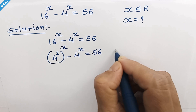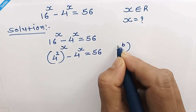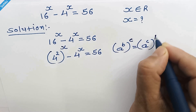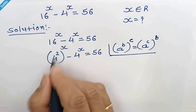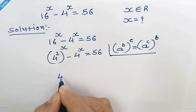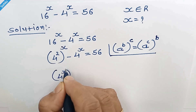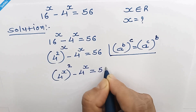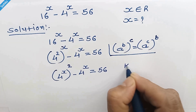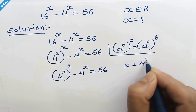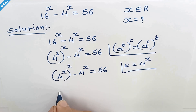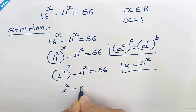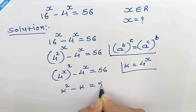Let's recall a rule: a raised to b, whole raised to c, can be written as a raised to c, whole raised to b. So this part can be written as 4 raised to x, whole square, minus 4 raised to x is equal to 56. Now let's take k in place of 4 raised to x, so we can write k squared minus k is equal to 56.